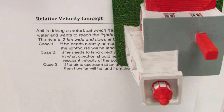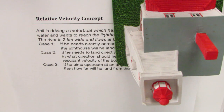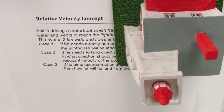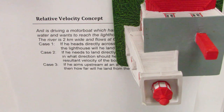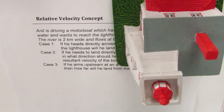Hi, I'm Anil Kumar. Welcome to my series on relative velocity. We'll try to understand the concepts involved when working with questions based on relative velocity. I've taken up one particular example where a motorboat needs to land at a lighthouse. We'll assume the two banks of the river are parallel, the speed of the motorboat is constant, and the river flows at a constant rate. We'll have three different scenarios to discuss.